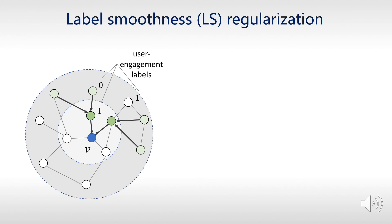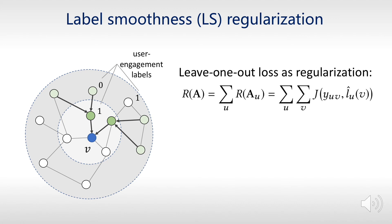We prove that the label smoothness regularization is equivalent to label propagation, and we therefore design a leave-one-out loss function for label propagation. Combining KGNN and LS regularization, we have this complete loss function for our proposed model.